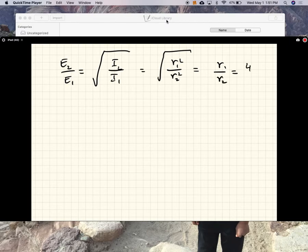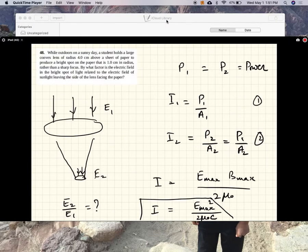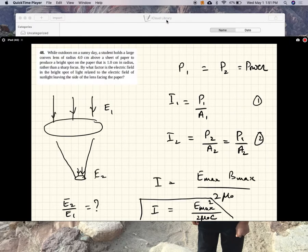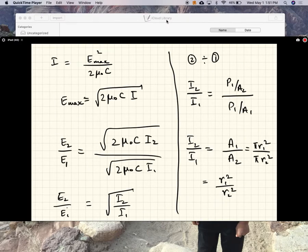So this is 4 centimeters divided by 1 centimeter. So E2 over E1 is 4.